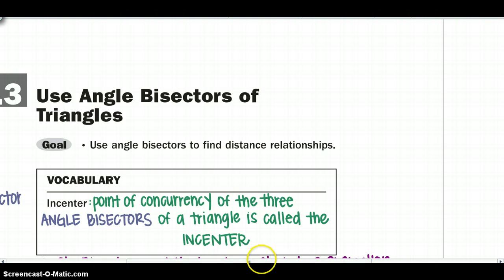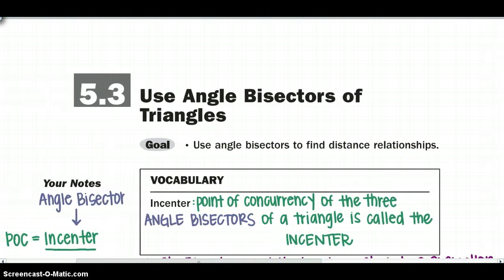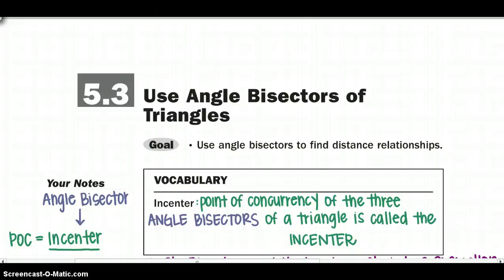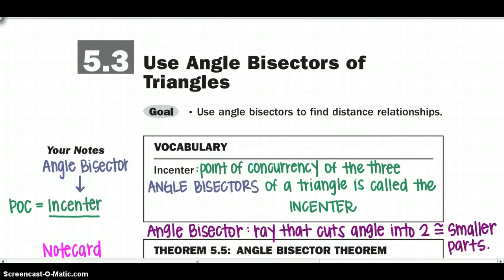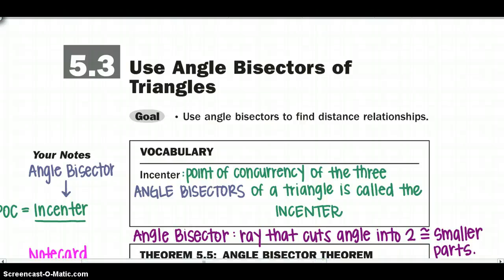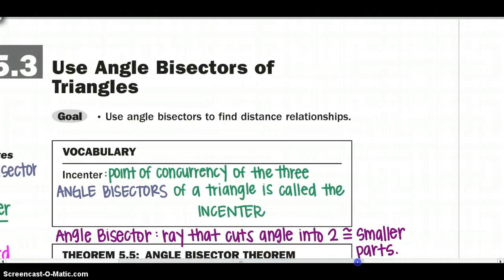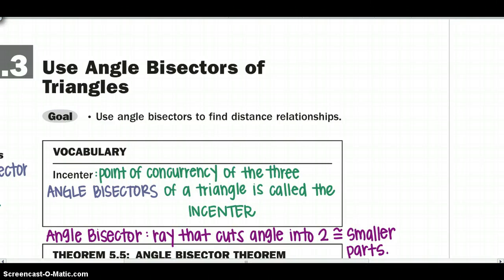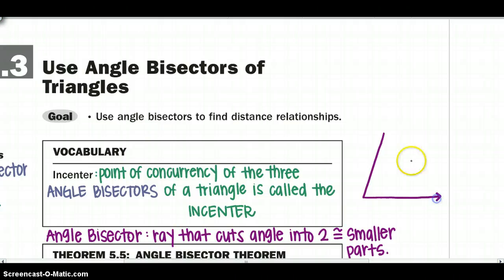Remember last section we talked about perpendicular bisectors and what their point of concurrency is. Today we are going to learn that with an angle bisector, that point of concurrency is going to be called the incenter. Just to refresh our memory, an angle bisector is a ray that cuts the angle into two congruent smaller parts. If I bisect an angle, I am not getting two congruent segments, I am just getting two congruent angles.